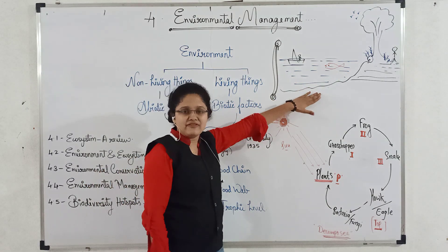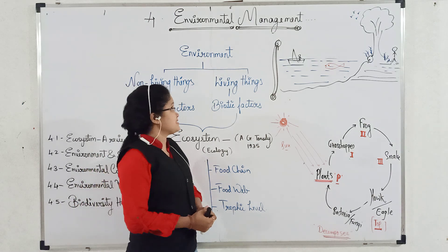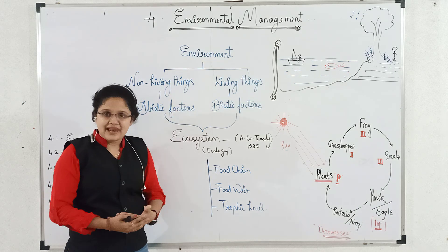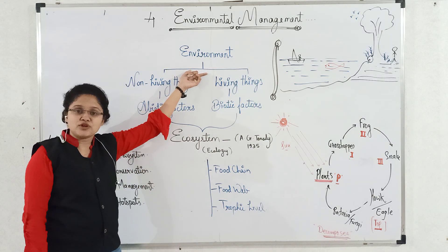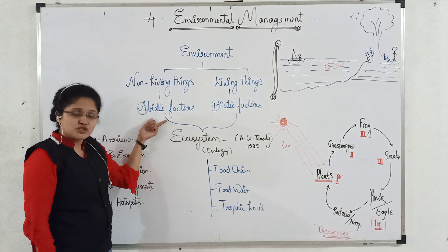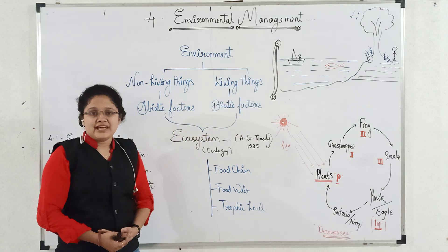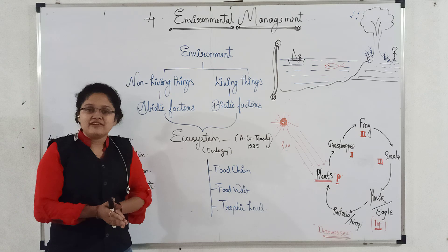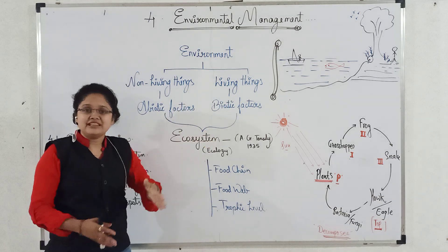Just observe this diagram. What can we observe? You will see some living things and some non-living things. The surrounding around us is called as environment. In environment, there are two types of factors or two types of components: the non-living things and living things, also called as abiotic factors and biotic factors.